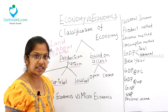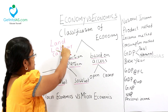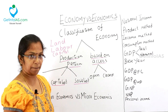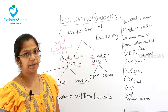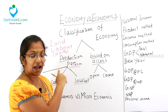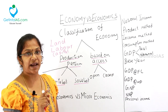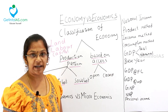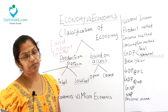In the capitalist economy, the factors of production — that is the land, labor and capital — are controlled by private players. The price of the products is based upon demand and supply.